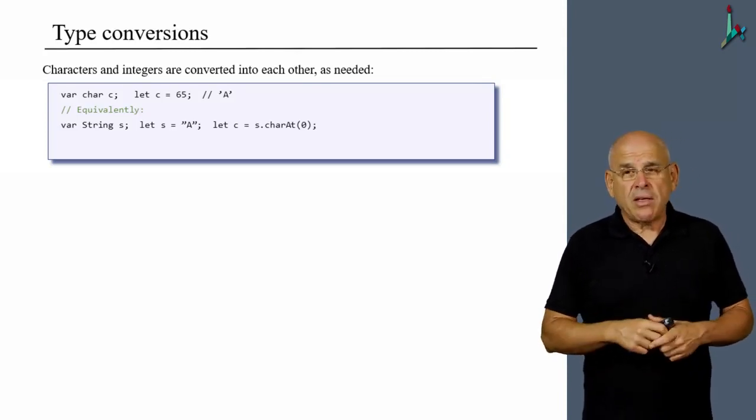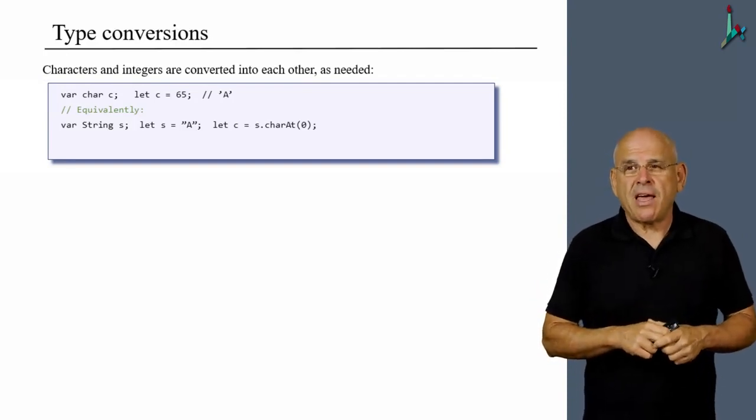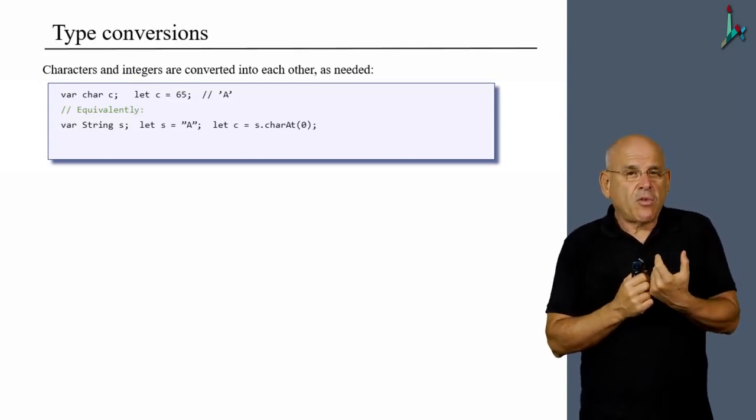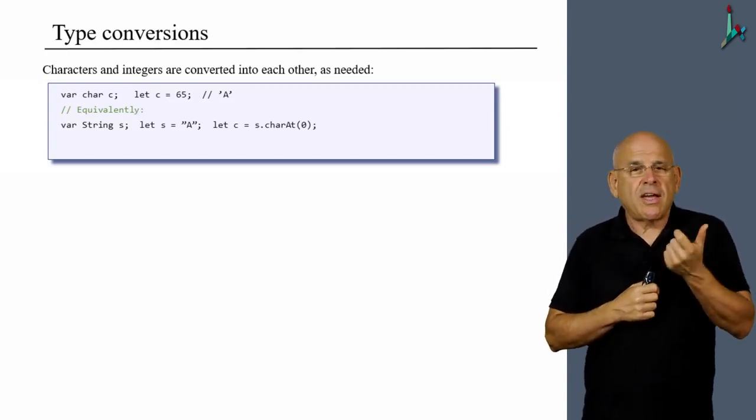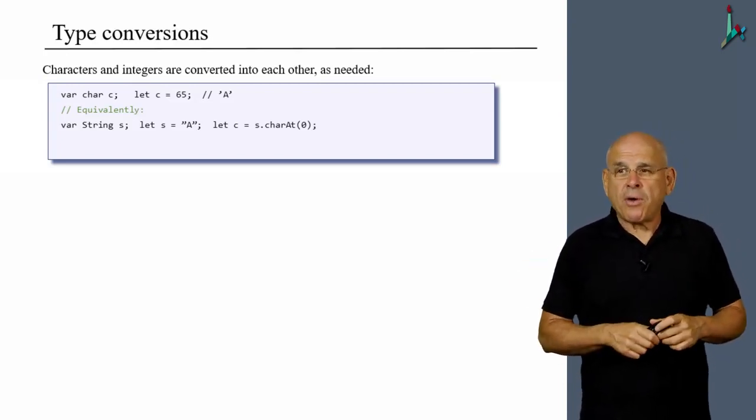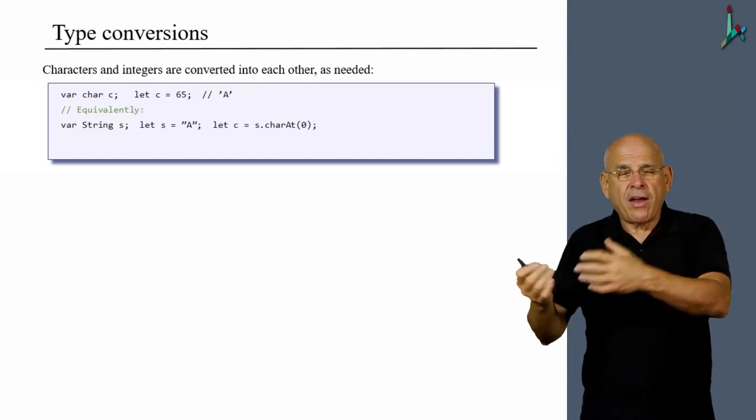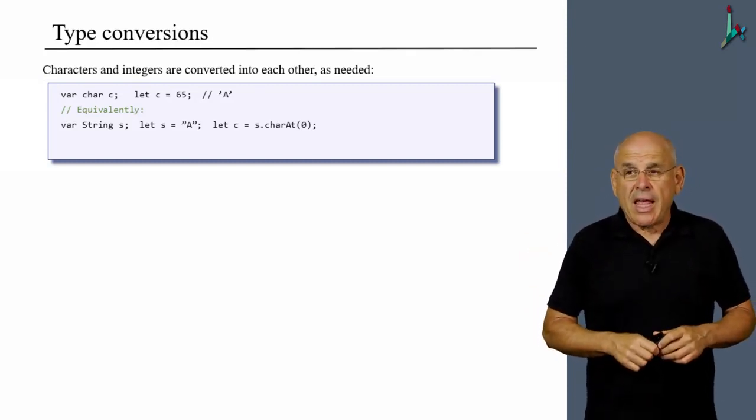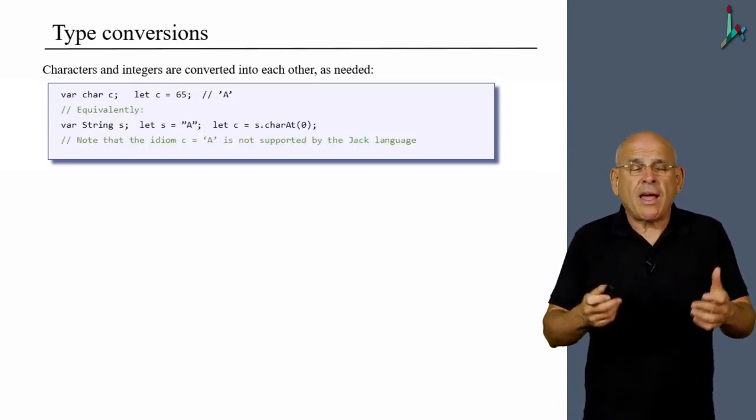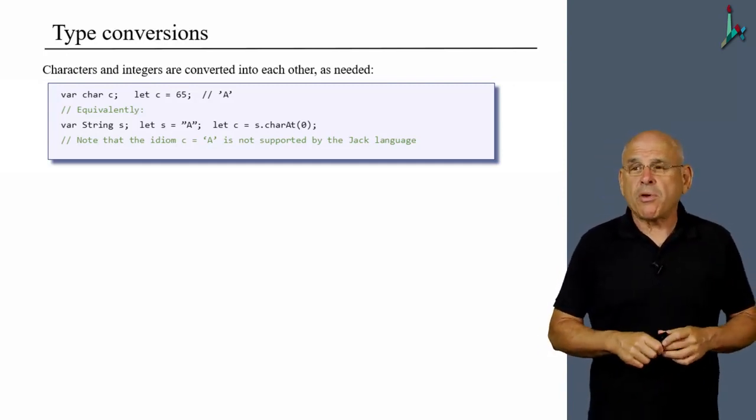Equivalently, I can also create a string called s. I can assign the string uppercase A to s with two double quotes. And if I want to convert it into a character, then I must use the charAt function, which is part of our operating system. And I do it by calling the charAt function on the s character. This is a little bit cumbersome because ideally you would like to say simply c equals quote A quote, but this idiom is not supported by the Jack language.